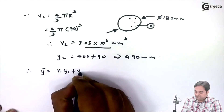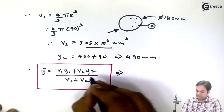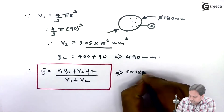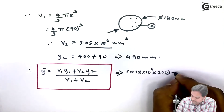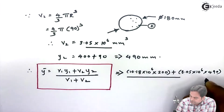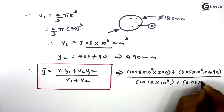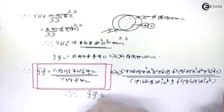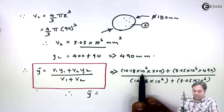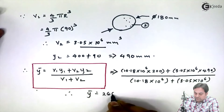Therefore Ȳ = (V1·Y1 + V2·Y2) / (V1 + V2). Substituting: numerator = (10.18 × 10⁶ × 200) + (3.05 × 10⁶ × 490), denominator = V1 + V2. Calculating numerator divided by denominator gives Ȳ = 266.92 mm. That is our second answer.